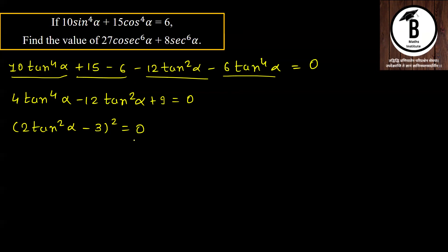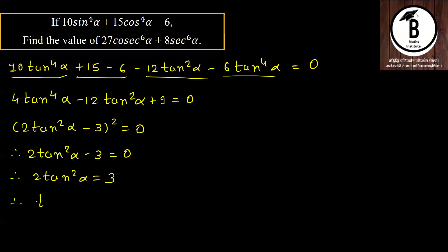यह (2·tan²α − 3)² = 0 के रूप में factor हो जाएगा। Simplify करने पर 2·tan²α − 3 = 0, therefore 2·tan²α = 3, और tan²α = 3/2। tan से उल्टा cot होता है, इसलिए cot²α = 2/3। दोनों की value मिल गई।